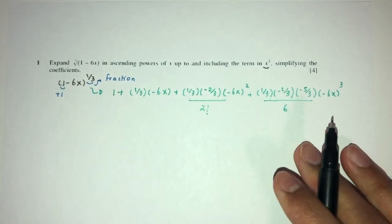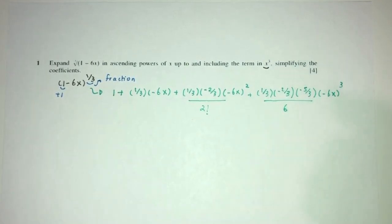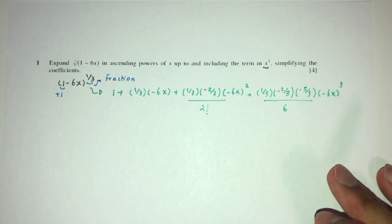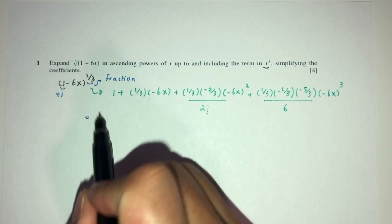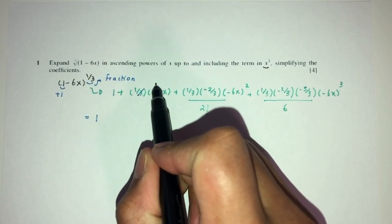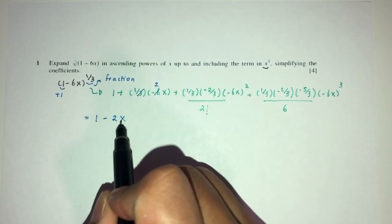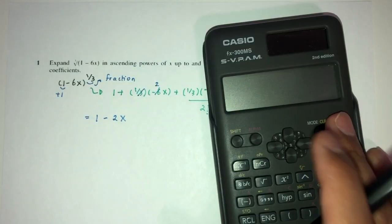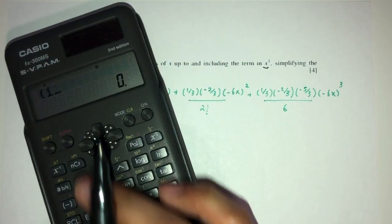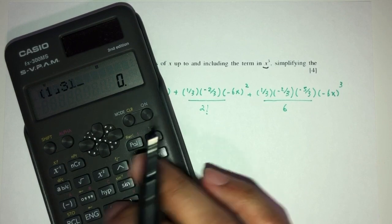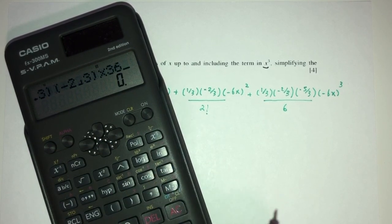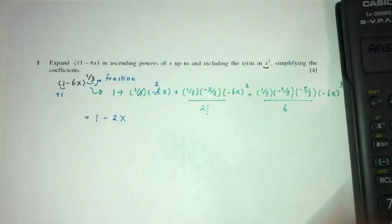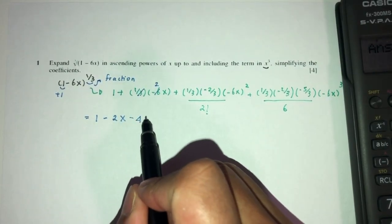Let's simplify this one by one. I would recommend using your calculator here because you do not want to make silly mistakes. So here we have 1. This will become minus 2x. Now for the x squared term, we have 1/3 times minus 2/3 times 36 divided by 2 — that gives minus 4x squared.